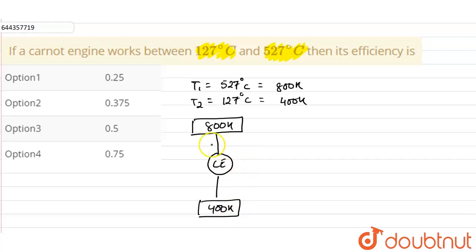Now we have to find what will be the efficiency of the Carnot engine. Now, as we know, that efficiency of a Carnot engine is given as 1 minus T_lower upon T_higher.